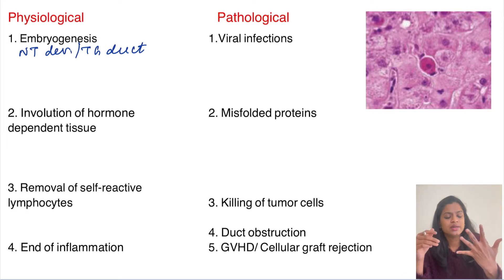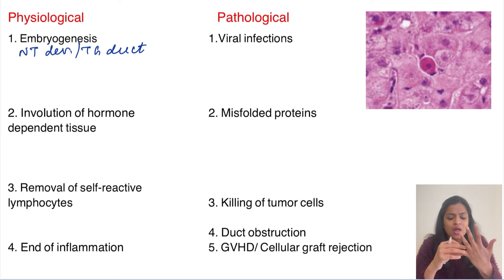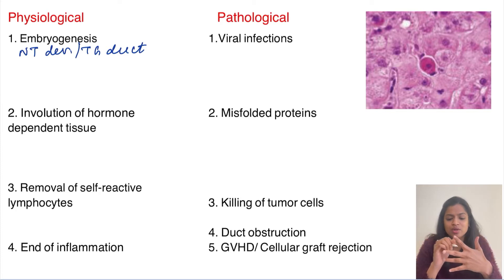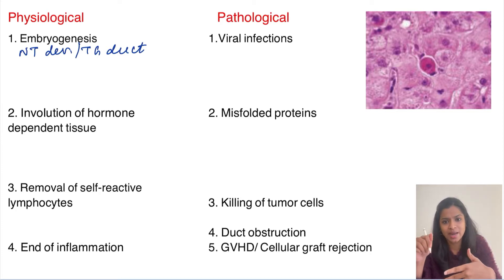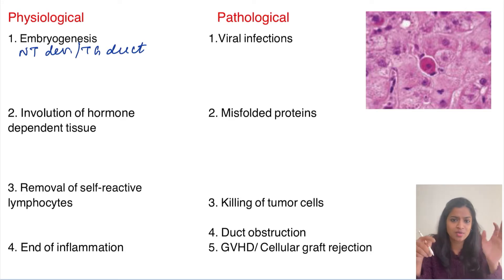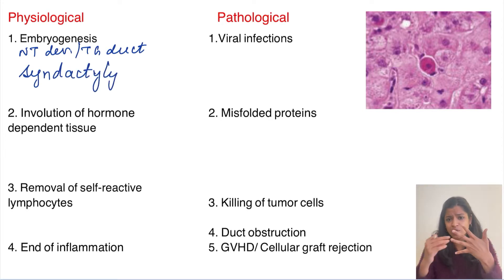Another physiological example is the development of fingers. Initially the hand looks like a mass of material, with material present in between the fingers. This inter-finger material gets destroyed by apoptosis, allowing individual fingers to form. When apoptosis doesn't happen properly here, it results in syndactyly — fused fingers with no individual separation.